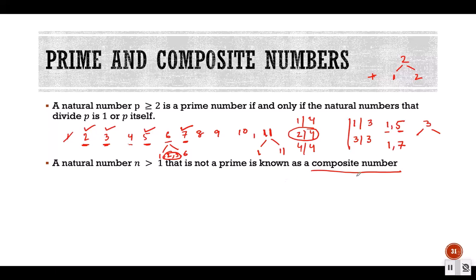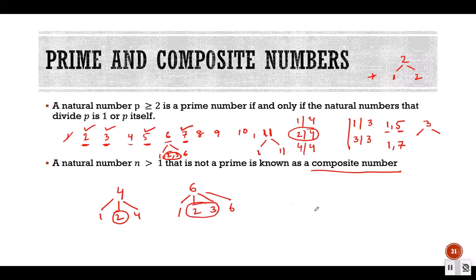A composite number has at least one divisor other than 1 and the number itself. For example, 4 has divisors 1, 2, and 4 — here 2 is an extra divisor. The number 6 has divisors 1, 2, 3, and 6 — two extra divisors. The number 10 has divisors 1, 2, 5, and 10 — again two extra divisors.